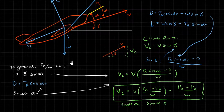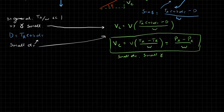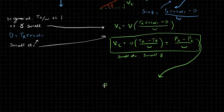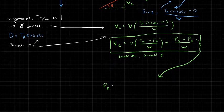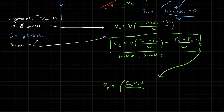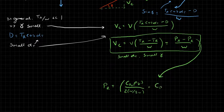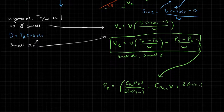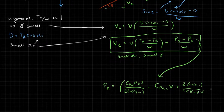The power required we already know from an equation we've derived. As a reminder, the power required is: CD0·ρ·V³ divided by 2 times the wing loading (W/S_w), plus CD0L·V, plus 2 times the wing loading (W/S_w) divided by π·e·AR·ρ·V — all times W. So we know that; this is review for us.